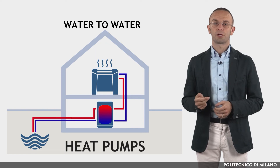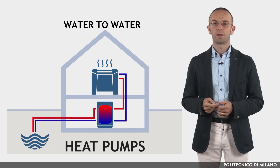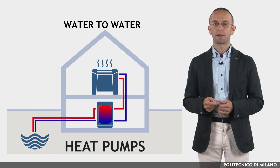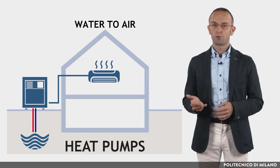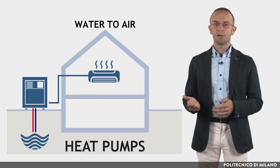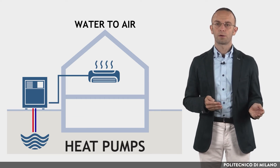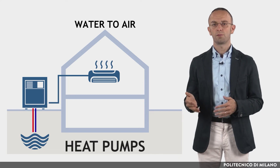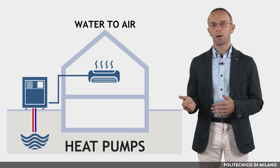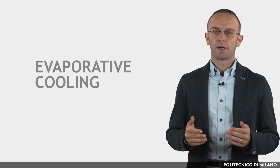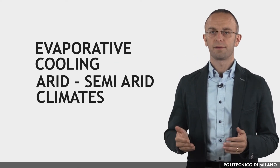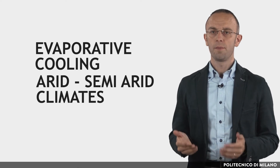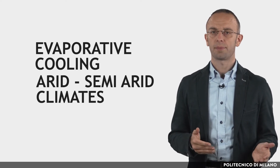Water-to-water: the refrigeration machine draws heat from the internal water circuit and transfers heat to the external environment by means of a water-cooled condenser. Water-to-air: the refrigeration machine draws heat from the internal water circuit and transfers heat to the external air by means of an air-cooled condenser. As regards evaporative cooling, it can be effective in hot, arid, and semi-arid climates, where humidity can be very low and temperature high.